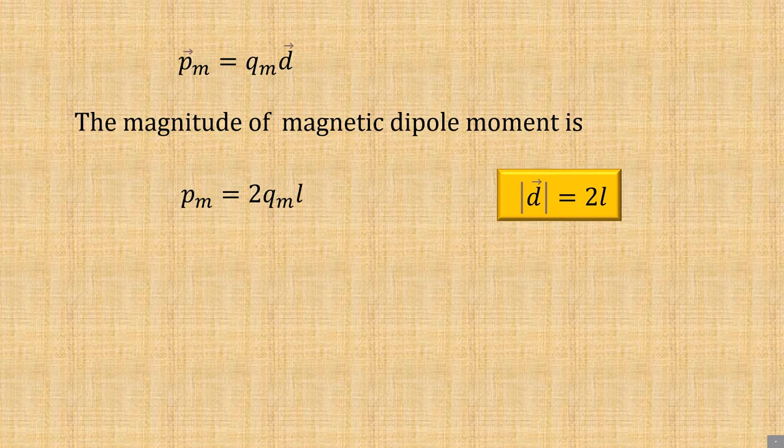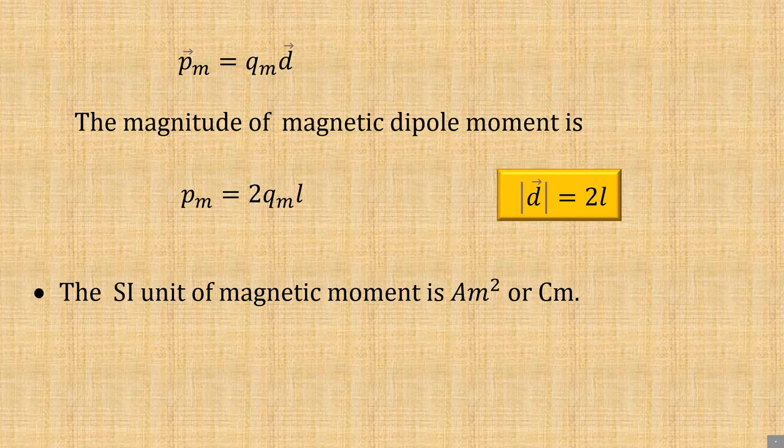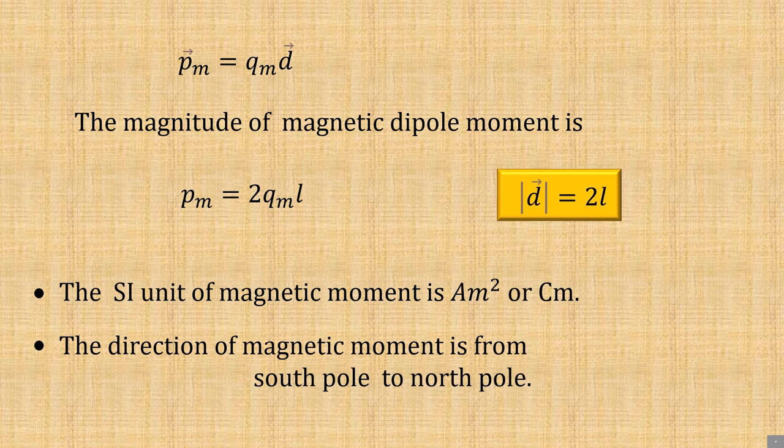From that, we got Pm equals Qm times l. Note that the SI unit of magnetic moment is Am squared or Cm. The direction of magnetic moment is from south pole to north pole.